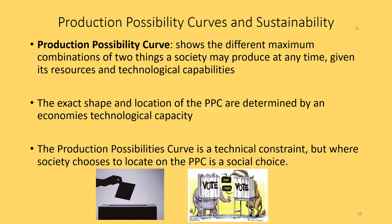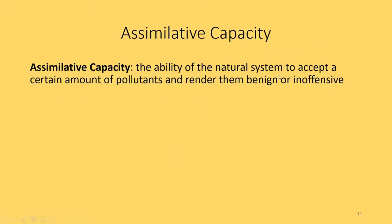Welcome back everybody to part two of chapter two. We left off last time talking about sustainability — the idea that your current actions are not going to reduce your future opportunities — and how that relates to the production possibilities curve. A sustainable practice is one that will not reduce or shift in that production possibilities curve; it's either going to keep the curve where it is or expand it outward, allowing you to produce more in the future rather than less.